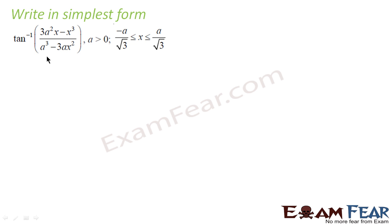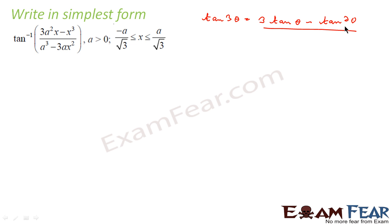We have this big formula and we need an approach. One formula that comes to mind is tan(3θ), which is (3tanθ - tan³θ) / (1 - 3tan²θ). This is the formula for tan(3θ) and if you see, the formula is almost matching.